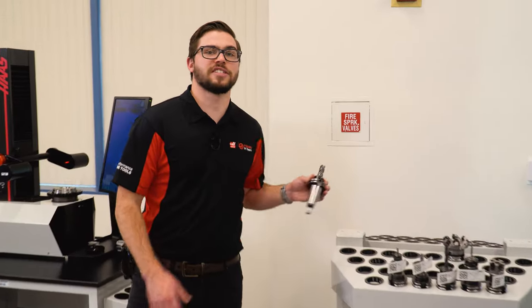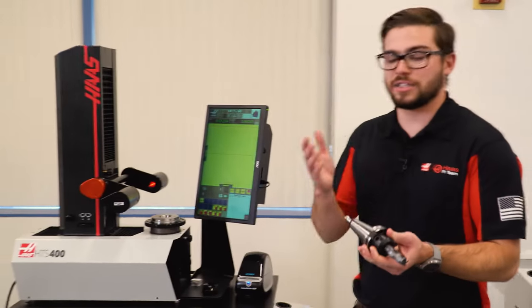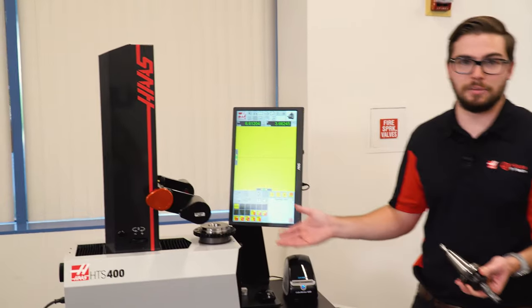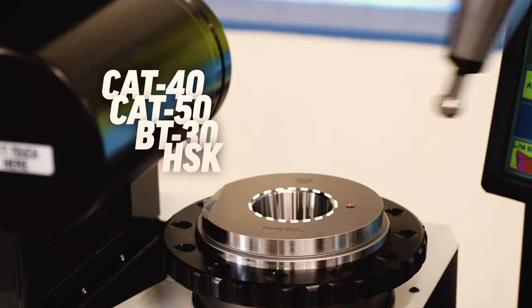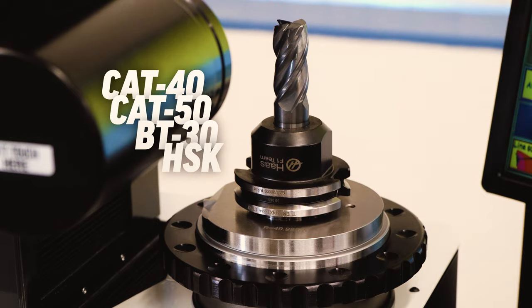Now using the pre-setter is actually pretty simple. First, take the tool and make sure you put it in a tool sleeve of the correct taper size. I've got CAT-40, but we also have BT-30, CAT-50, and HSK as well.